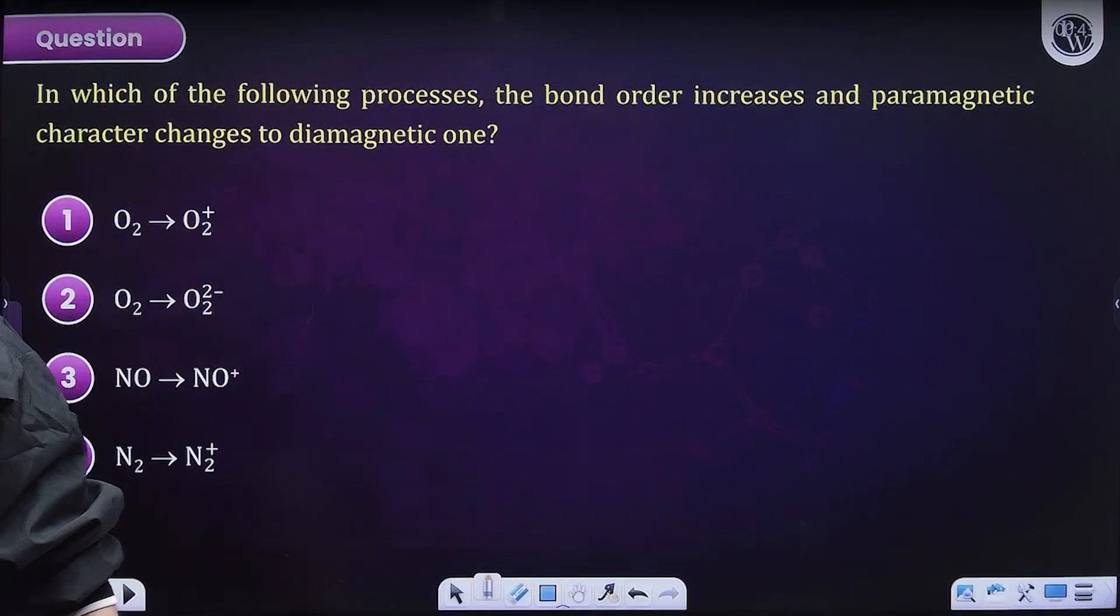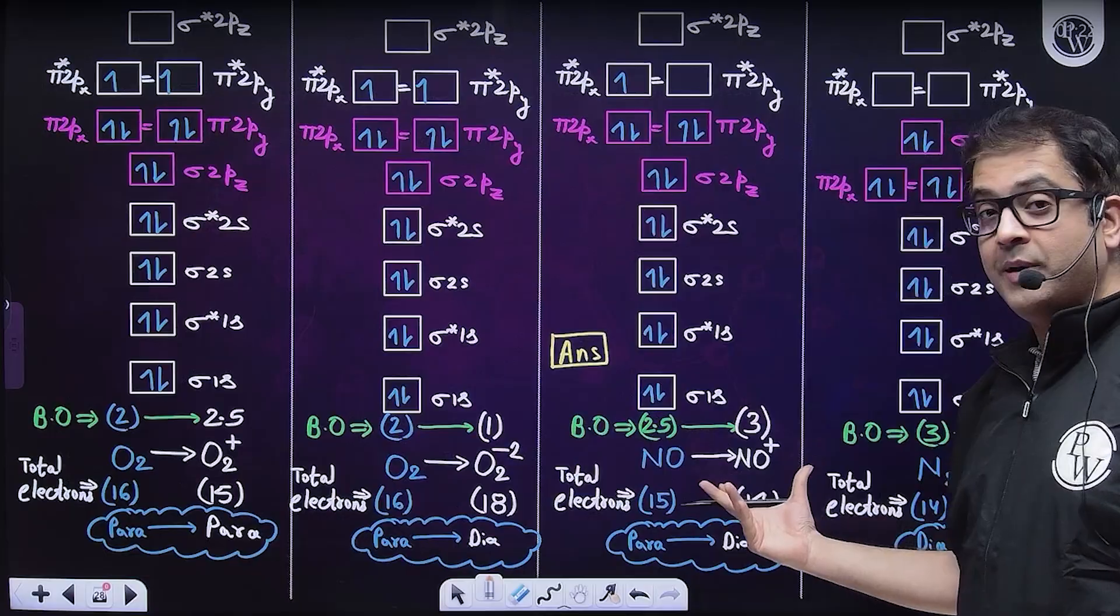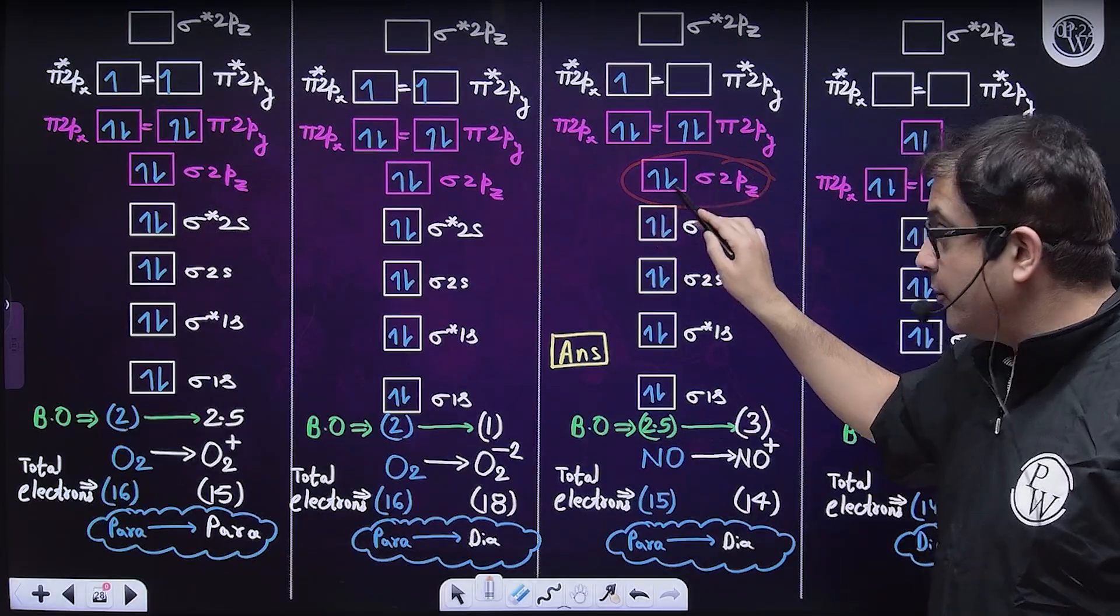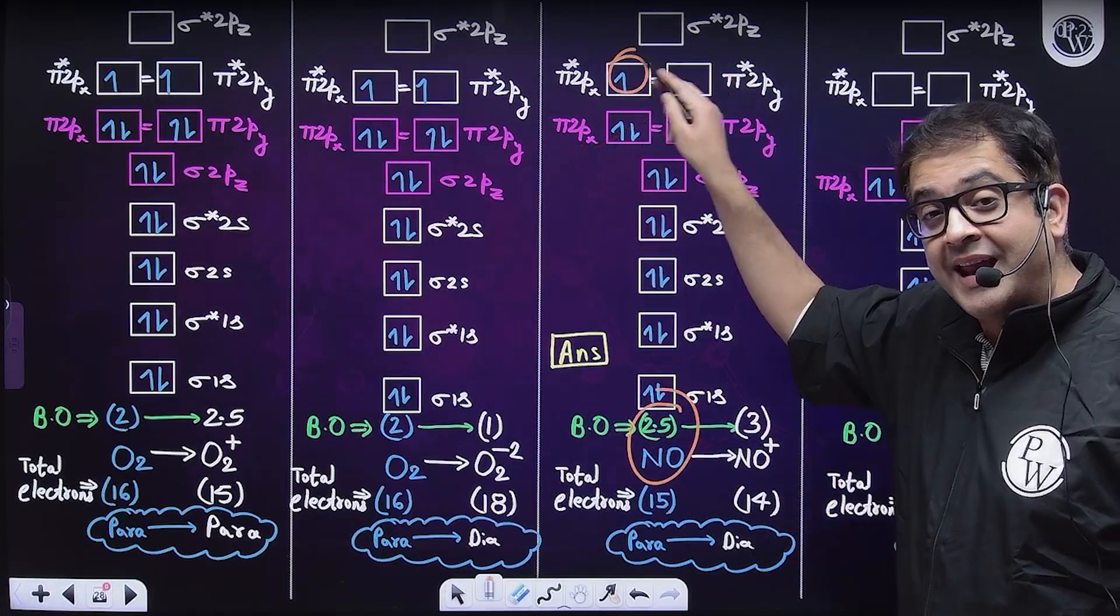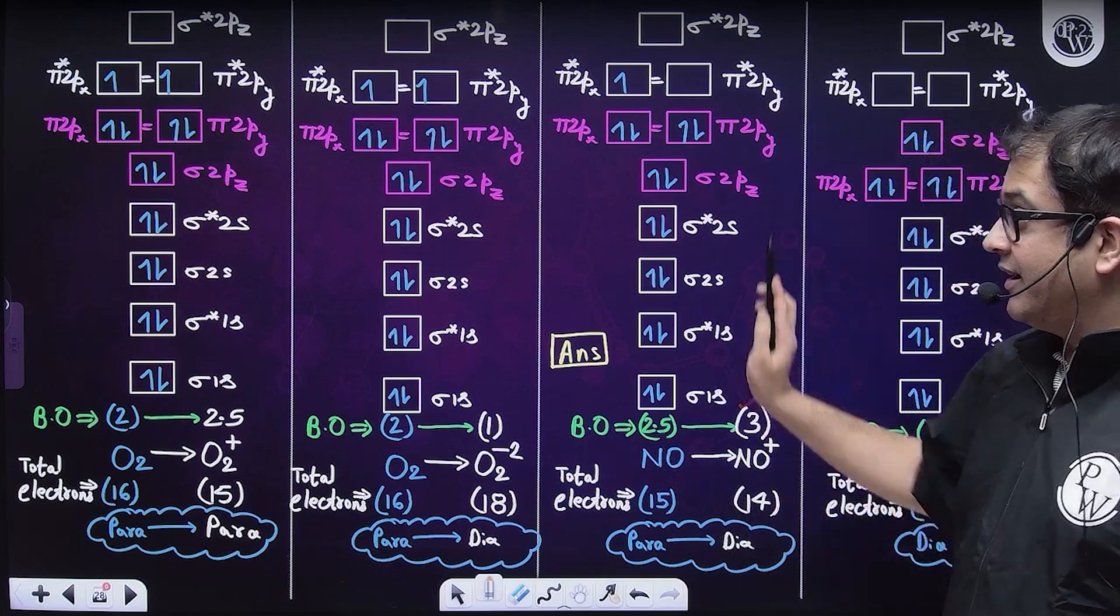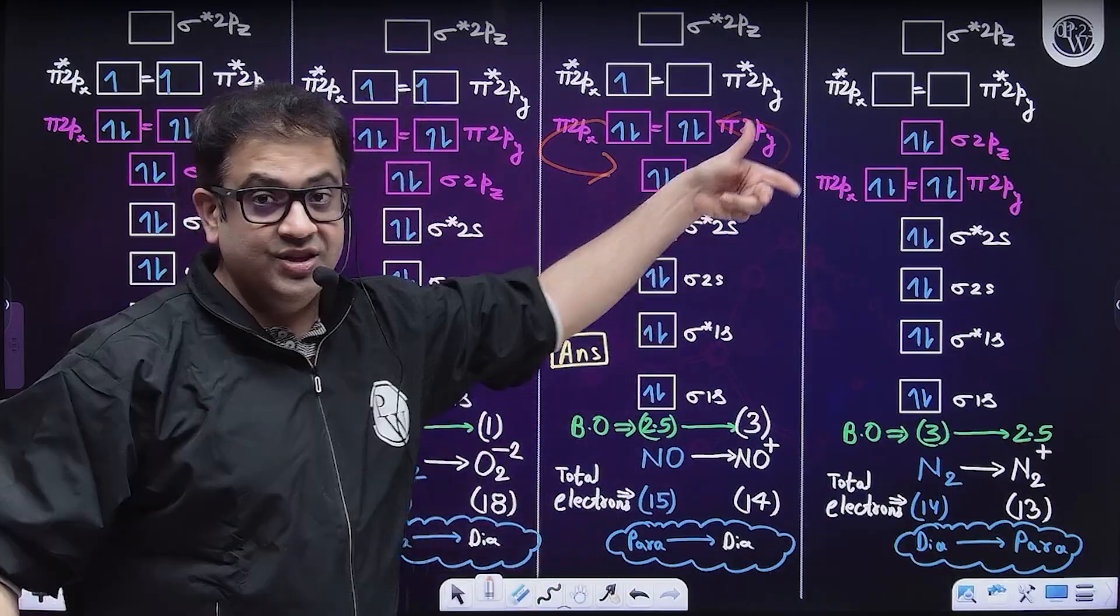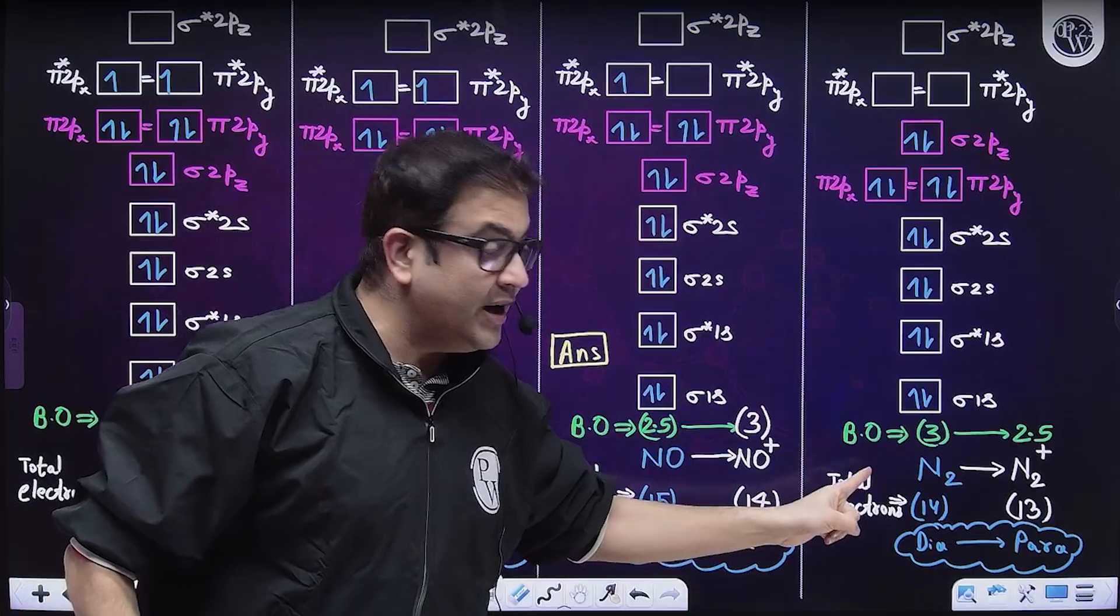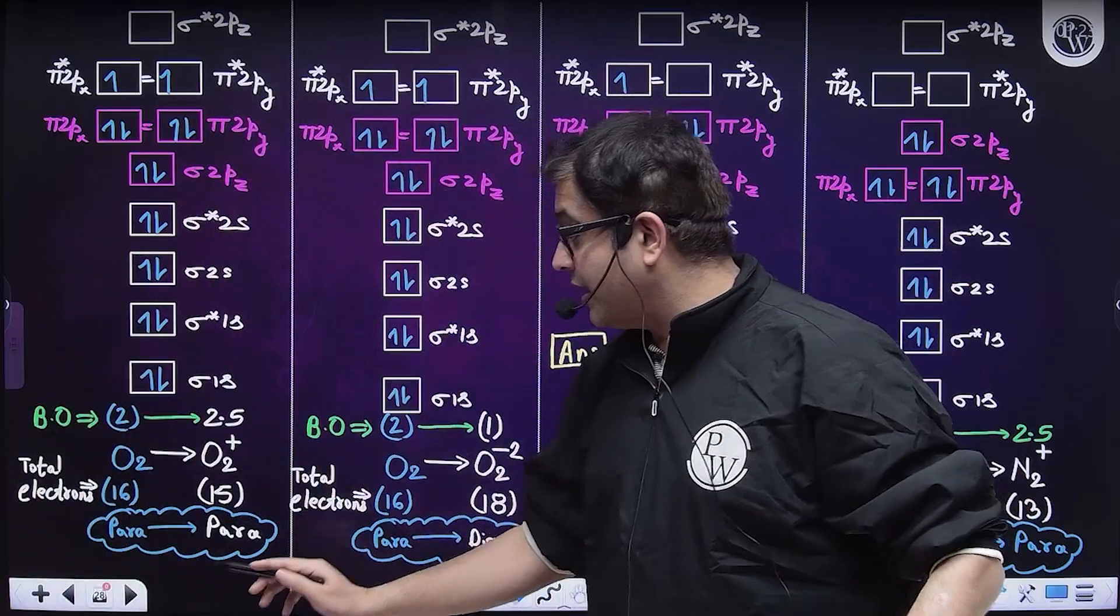Let us attempt this question from molecular orbital theory. Answer is NO to NO+, because NO electronic configuration of molecular orbitals follows sigma 2Pz is filled first, followed by pi 2Px and pi 2Py. Its bond order for NO will be 2.5. For NO+, I will remove this electron because it is an anti-bonding electron. So bond order will increase to 3. Bond order is increasing and from paramagnetic, it is becoming diamagnetic.